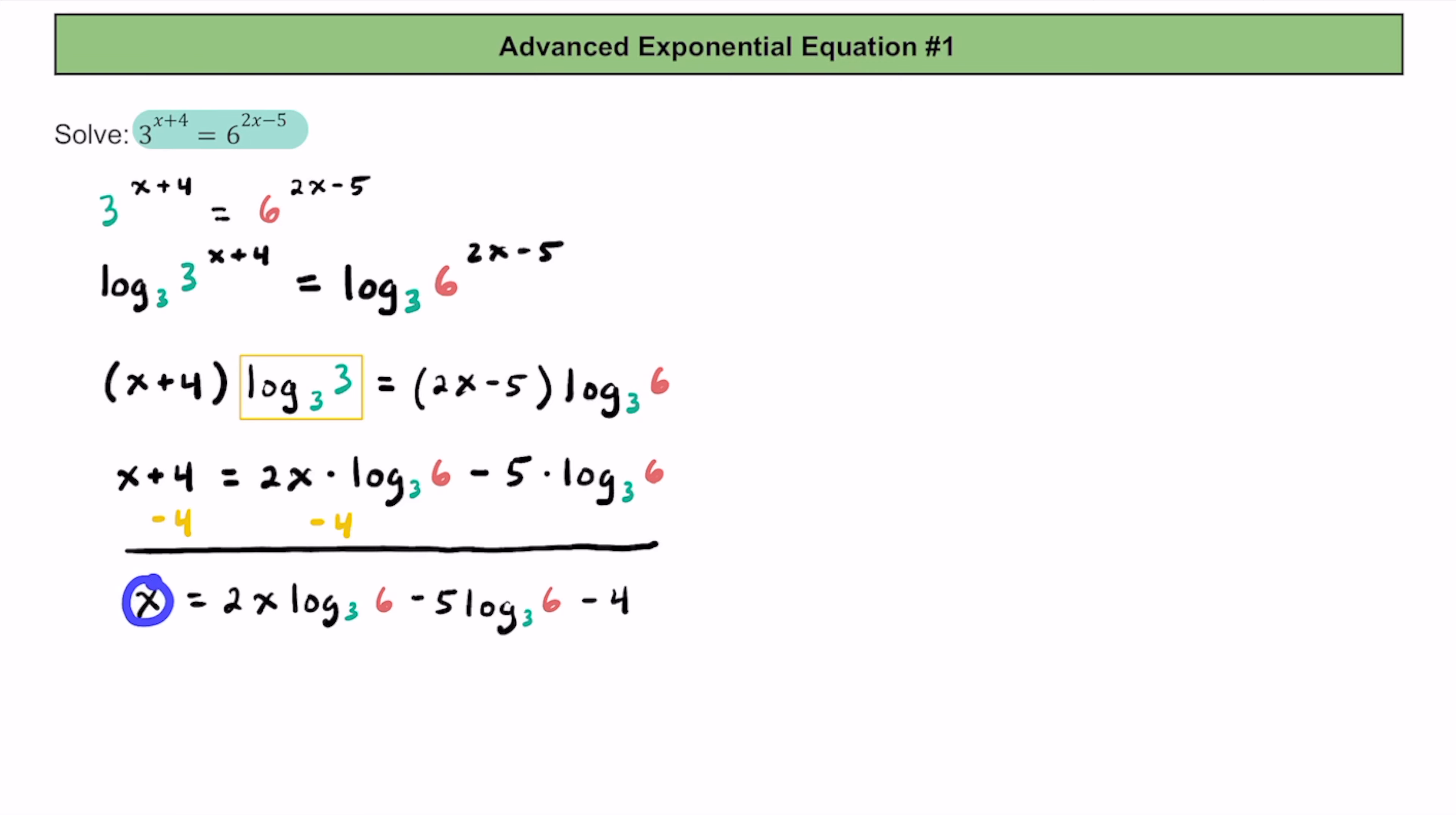And again, we want to get these x's on the same side of the equation, so let's get them both to the left side of the equation. We can do that by subtracting 2x times log base 3 of 6 from both sides.